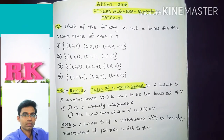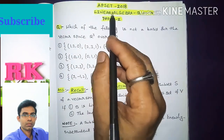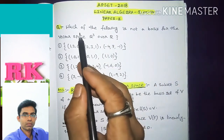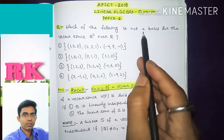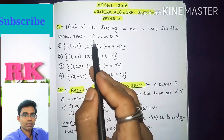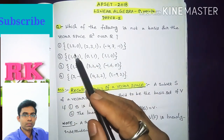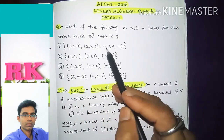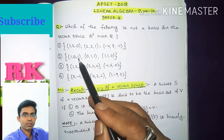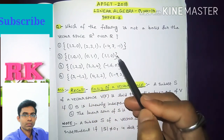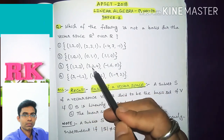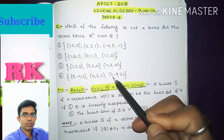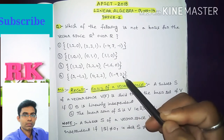Hi everyone, this is Ram Krishna, welcome to my channel. In this video I'm going to discuss the 2018 linear algebra question number 14 from Paper 2. The question is: which of the following is NOT a basis for the vector space R³ over R? The four options are: Option 1 — vectors {1,2,0}, {2,3,1}, {-4,7,1}; Option 2 — {1,0,1}, {0,1,1}, {1,1,0}; Option 3 — {1,2,3}, {3,2,4}, {-1,6,0}; Option 4 — {3,-1,2}, {4,3,2}, {1,-9,2}.